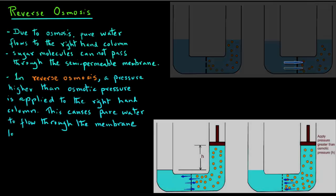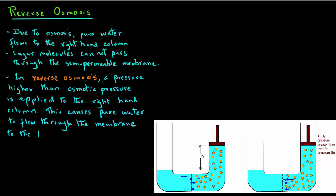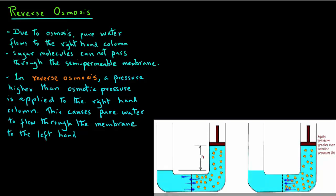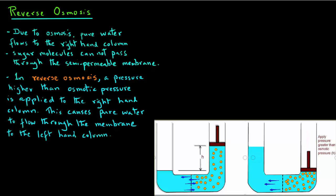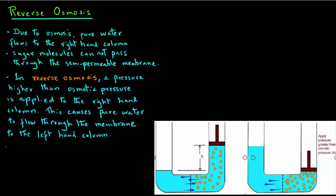So, in reverse osmosis, a pressure higher than the osmotic pressure is applied to the right-hand column. This will cause pure water to flow through the membrane to the left-hand column. Note that the sugar molecules will be unable to move through that membrane, but water, due to the pressure applied on the right-hand side, will be forced to the left-hand side.